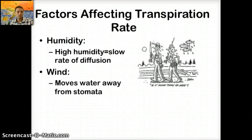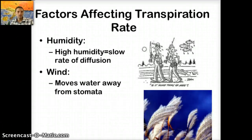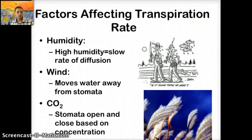Wind can also affect the rate of transpiration. Wind blows away water vapor that collects near the stomata of the leaves, ensuring a high concentration gradient due to the lack of water by the stomata. This increases the rate of transpiration. CO2 can also affect the rate of transpiration. The stomata open and close based on the concentration of CO2, so a high CO2 results in the stomata closing and lowering the overall rate of transpiration.